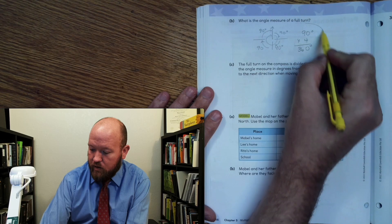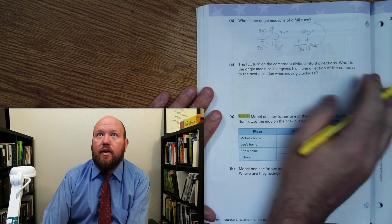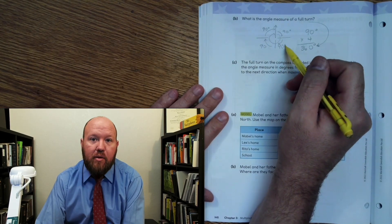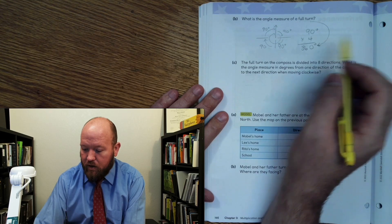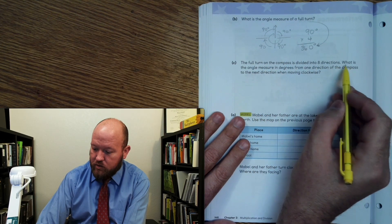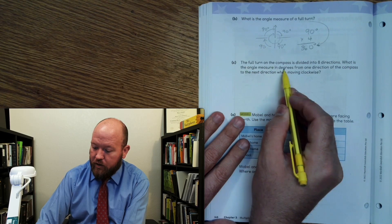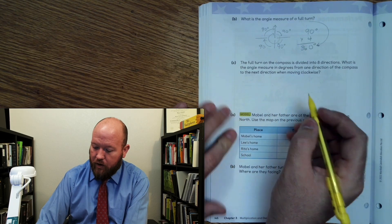So a full turn is 360 degrees. Now that's a math number that you should have memorized, but if not, you can use multiplication to figure it out. Now, the full turn on a compass is divided into eight directions. What is the angle measure in degrees from one direction of the compass to the next when moving clockwise?